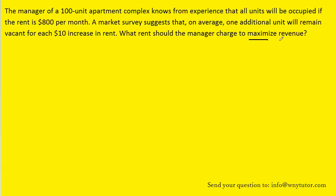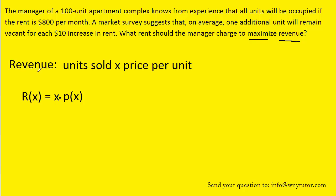In order to maximize revenue, we have to begin by understanding what revenue actually is. We can define revenue as the number of units sold times the price per unit. In function notation, we could call it r(x) = x · p(x), where x is the number of units sold and p(x) is the price per unit.